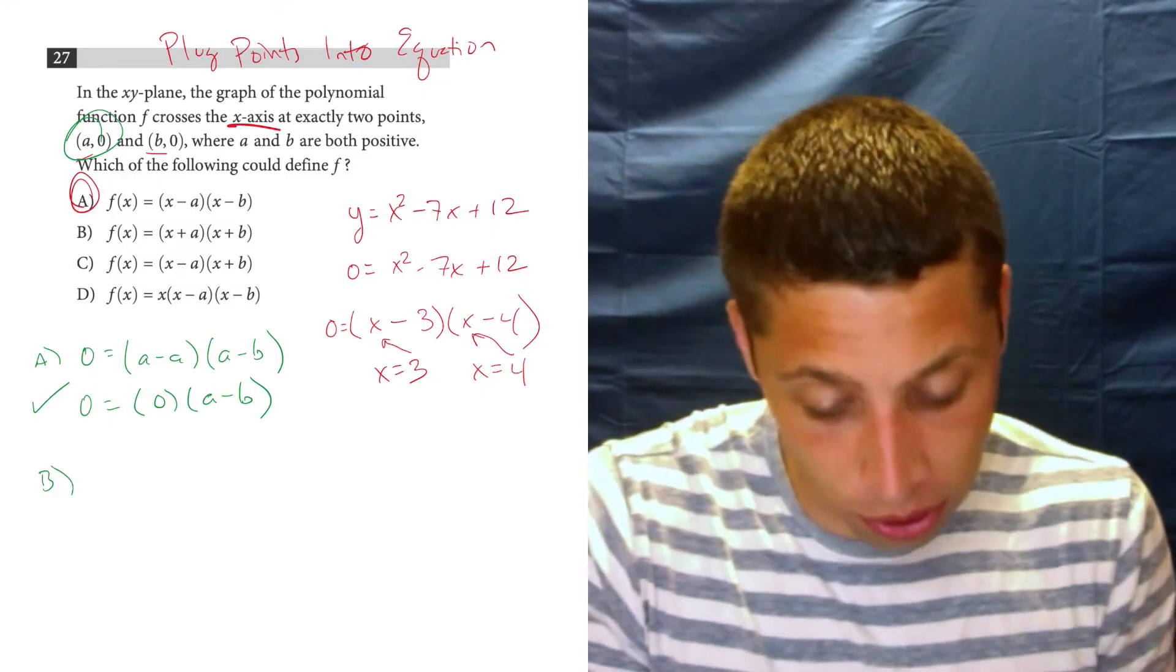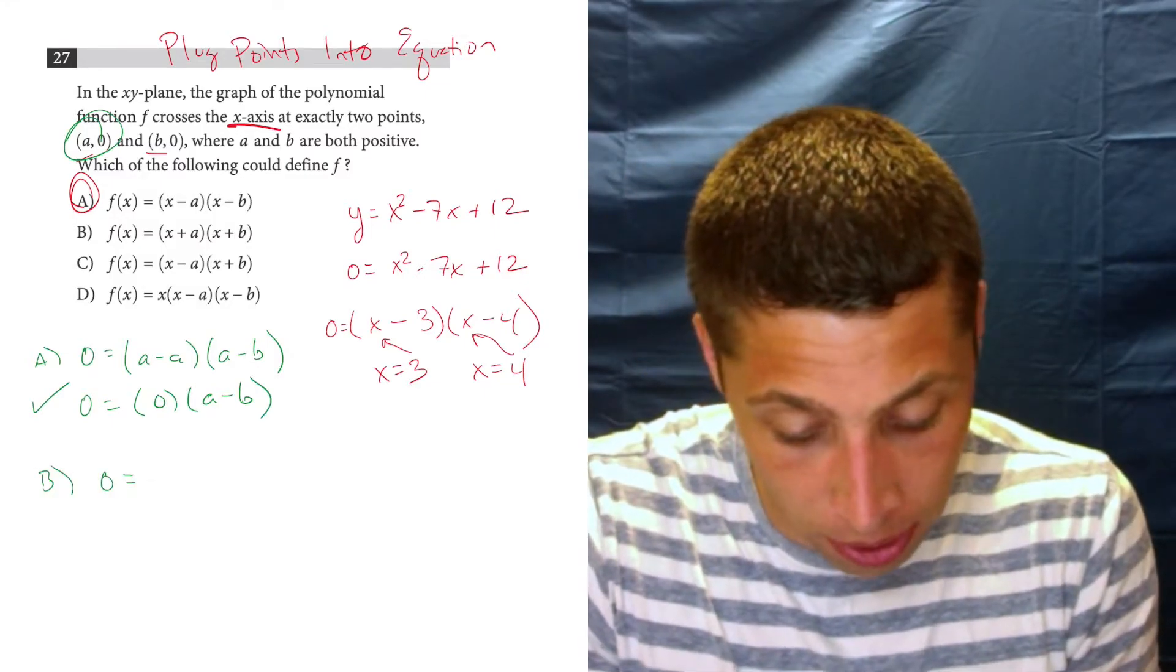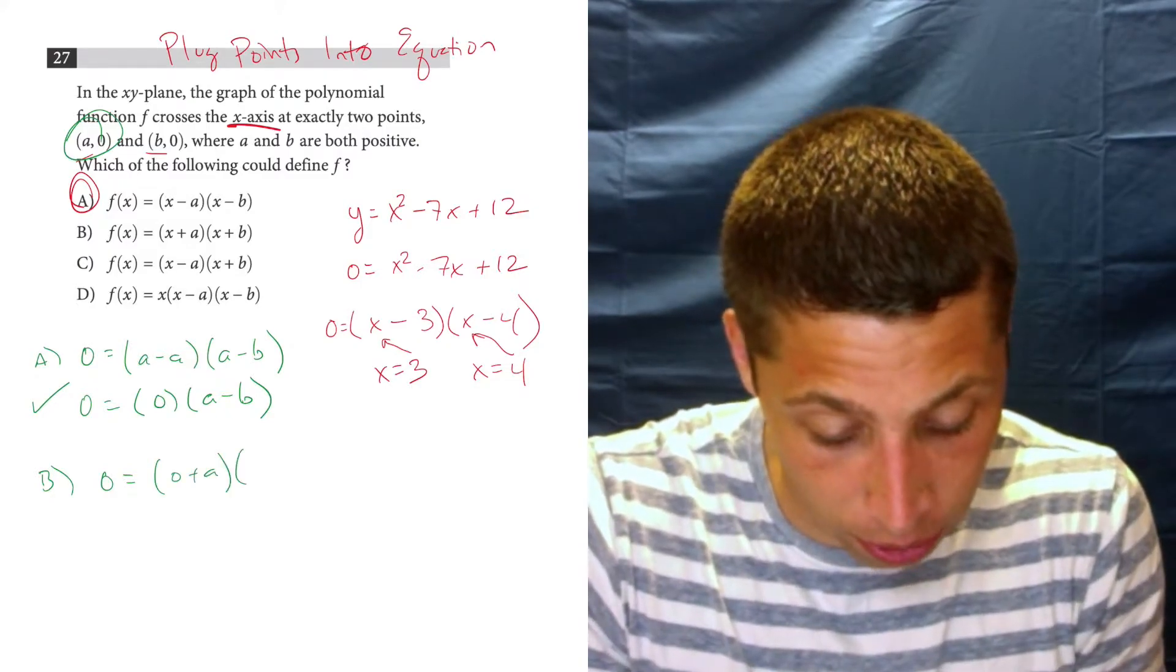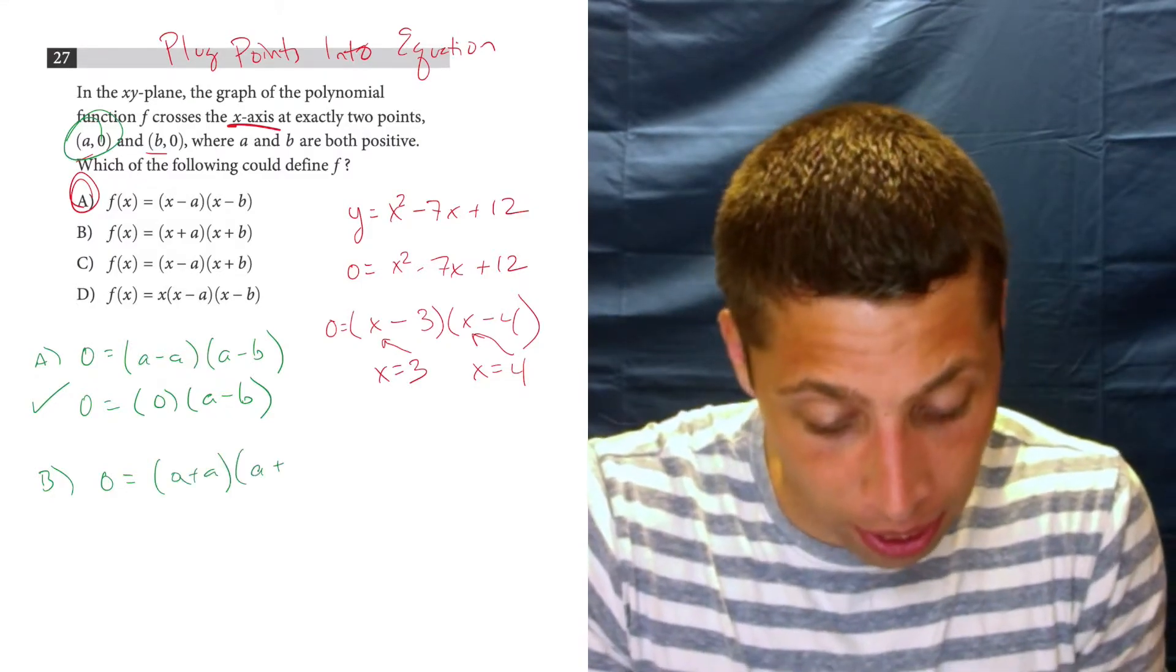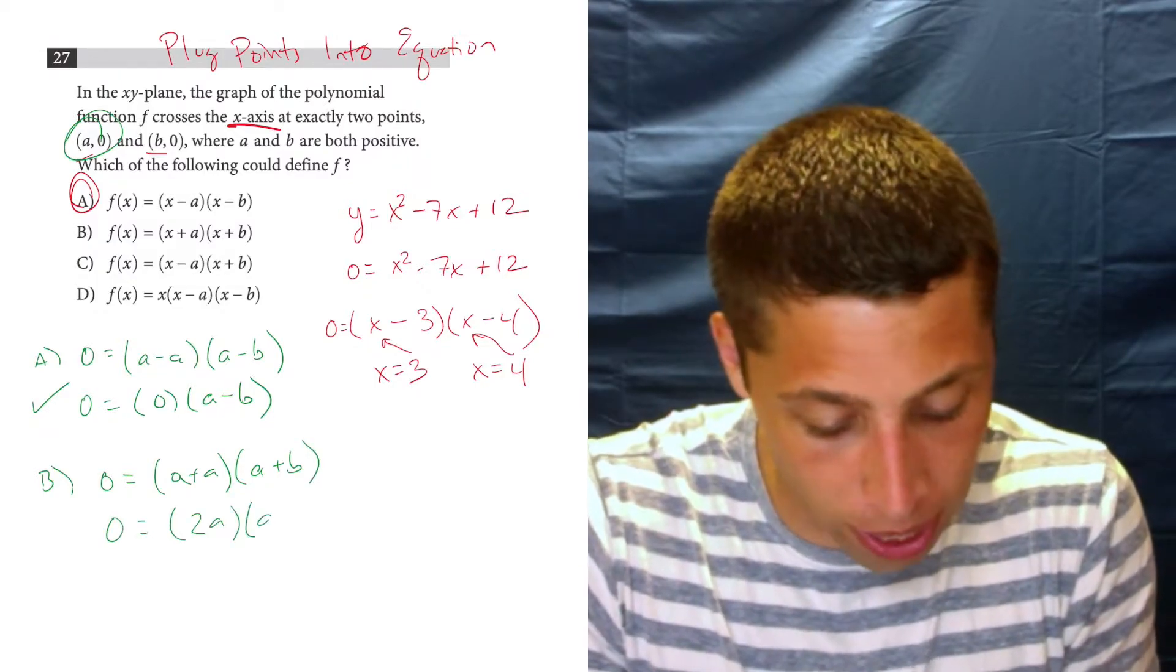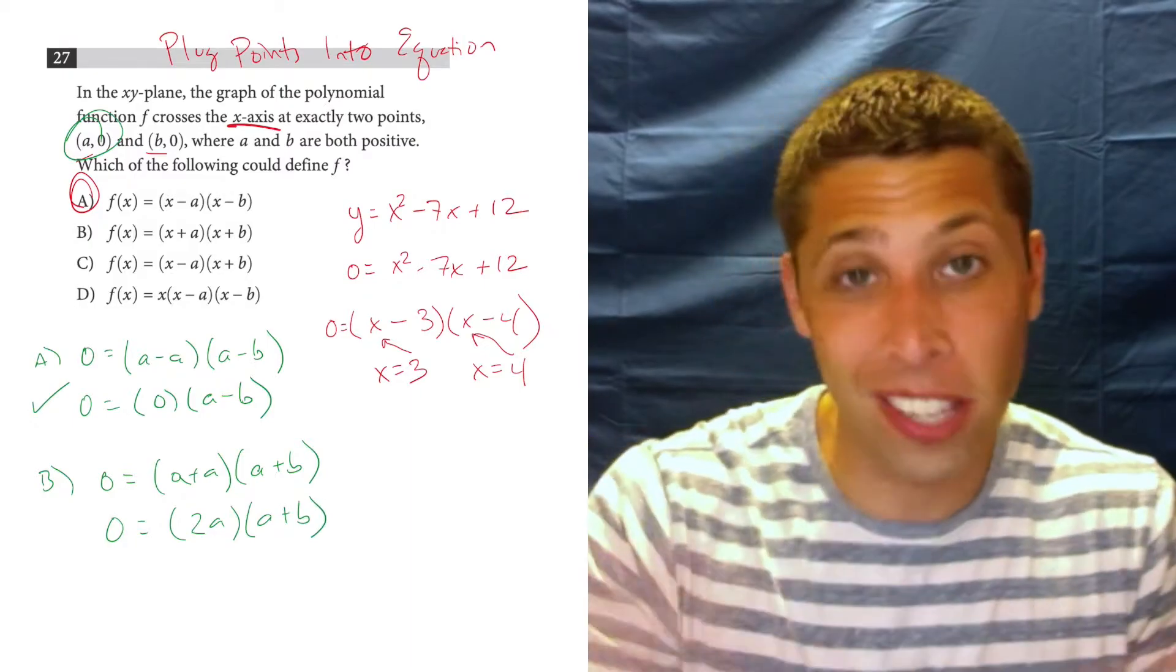And so we could do that for all the choices here. We can do it for b, and we're going to see that we've got a problem. 0 plus a, or sorry, a plus a, and a plus b, this is a mess. This is an algebraic mess. 2a times a plus b, we can just see that that's not going to be 0.